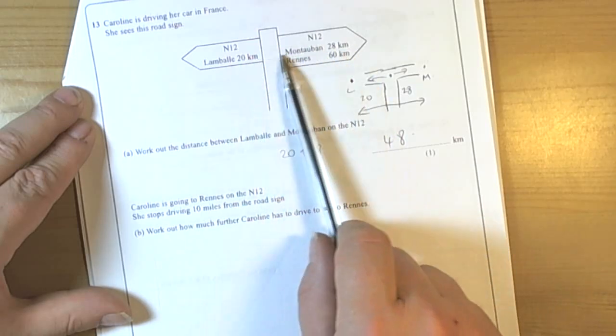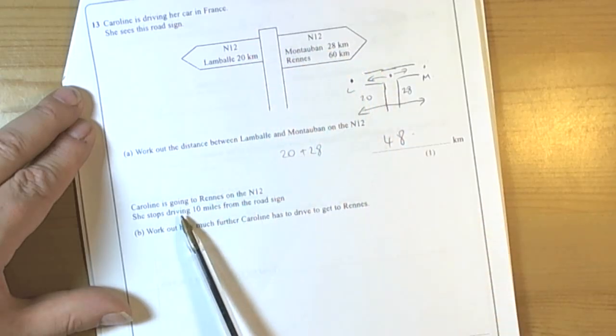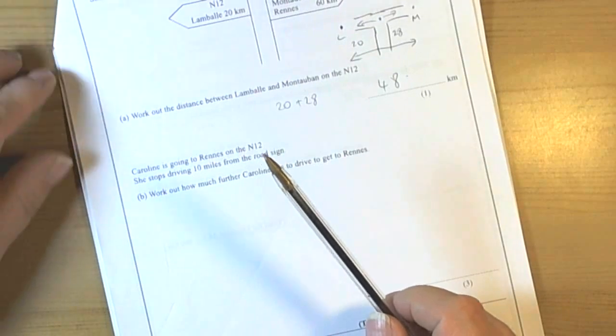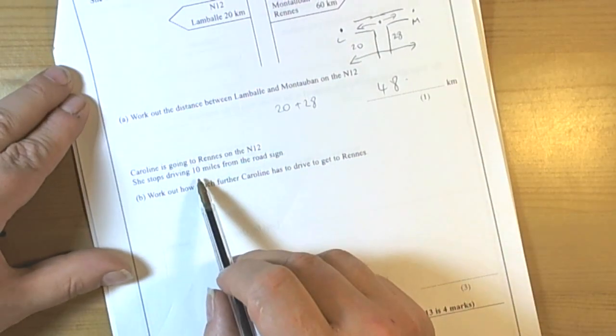Over in France, it's kilometres rather than miles on their signs. And here we've got miles. As soon as you see that, it's really telling us that we need to convert between the different units.